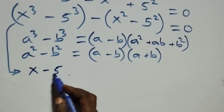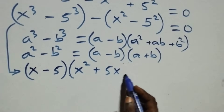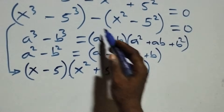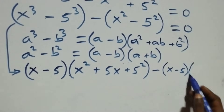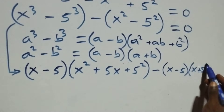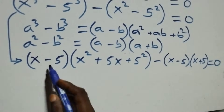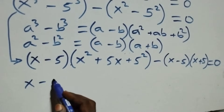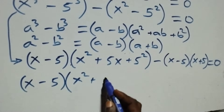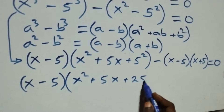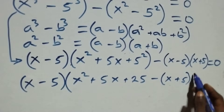So we rewrite all we have here. The first bracket becomes x minus 5, into brackets, then open bracket x squared plus 5x plus 5 squared, close bracket. Then minus — the second bracket becomes x minus 5, into bracket, then open bracket x plus 5, close bracket — then equals to zero.